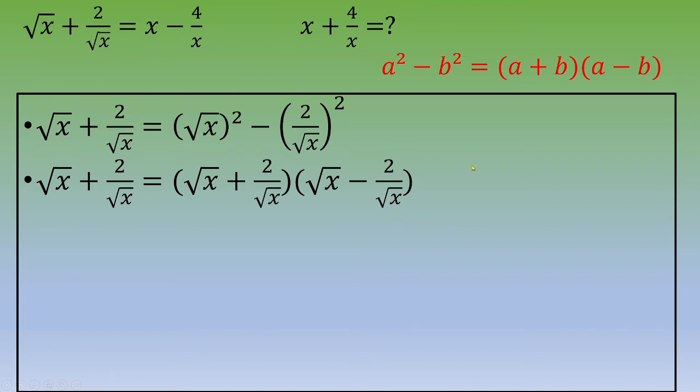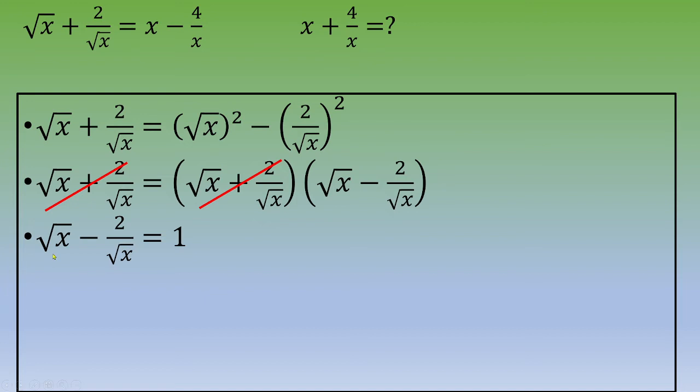And because we noticed earlier that x is a strictly positive number, square root of x plus 2 over square root of x is different from 0, so you can simplify. You end up with square root of x minus 2 over square root of x equals 1.